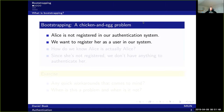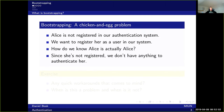Bootstrapping is basically a chicken-and-egg problem. Alice is not registered in our authentication system and we want to register her as a user. How do we know that Alice is actually Alice? The purpose of our authentication system is to authenticate Alice as Alice, and since she's not in the system, we don't have anything to authenticate her with.